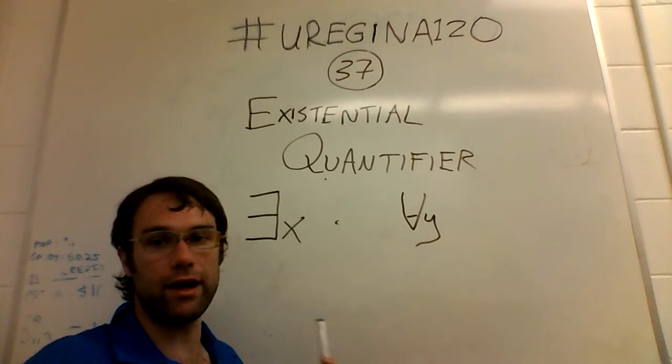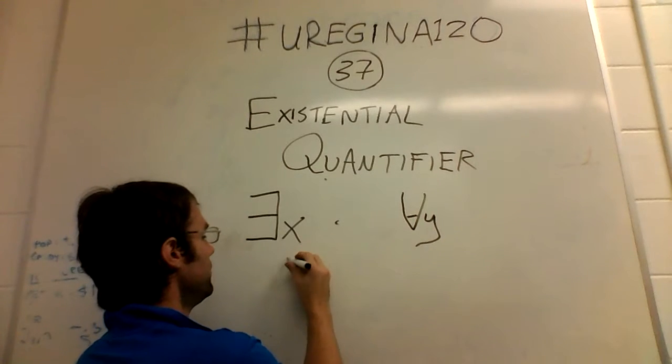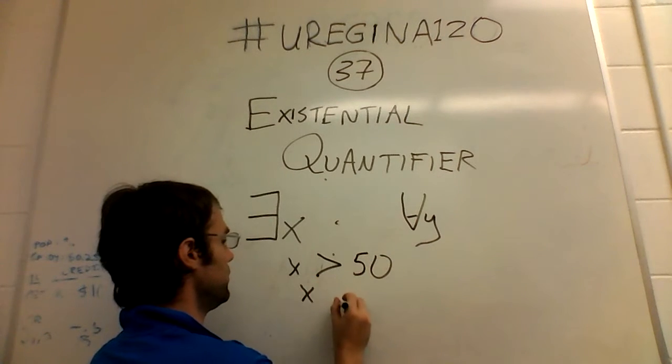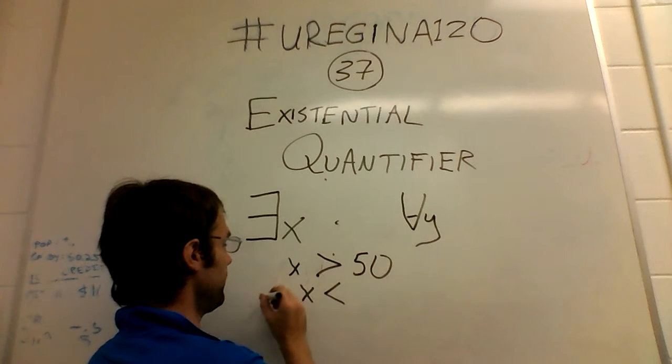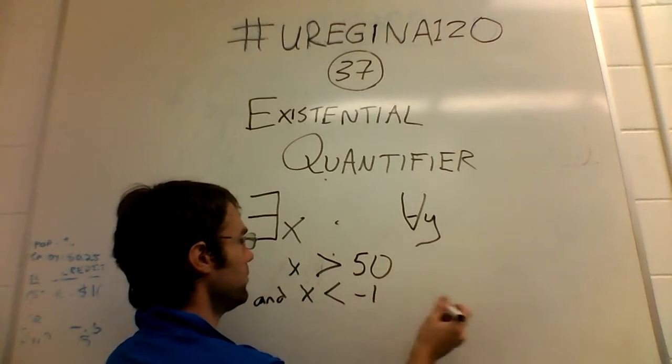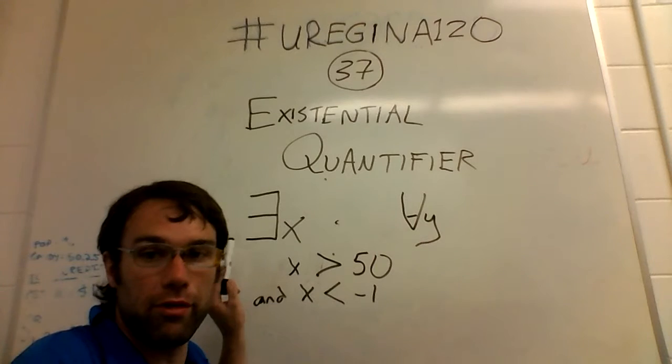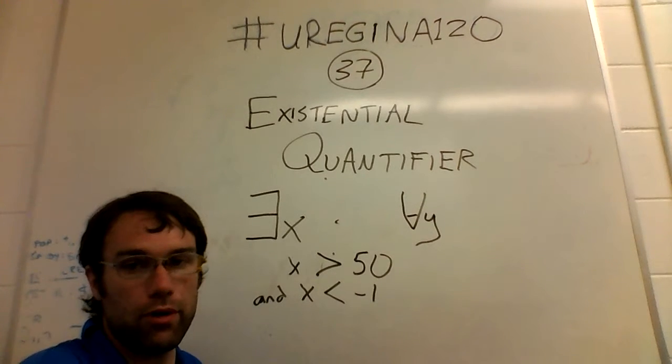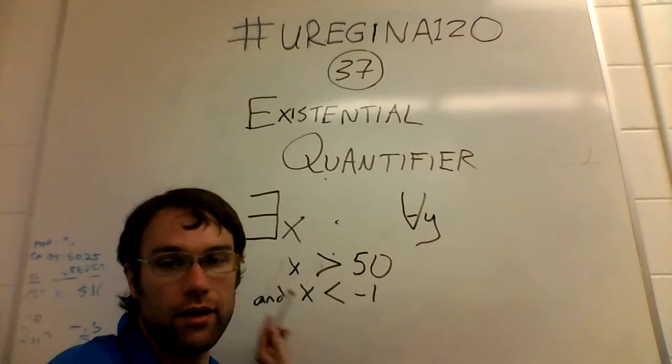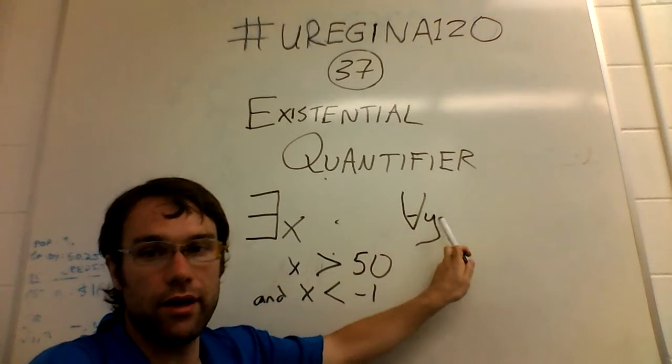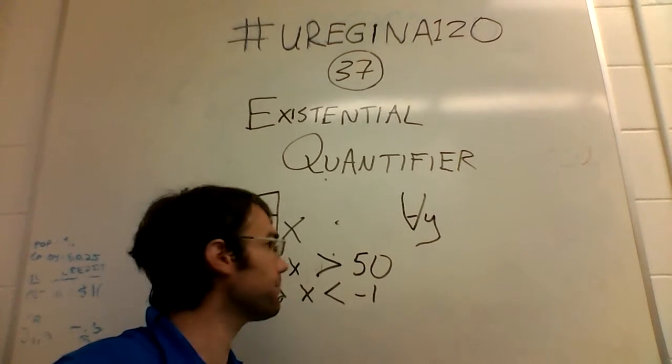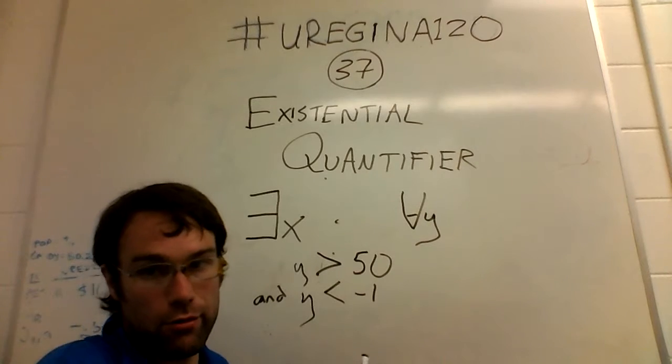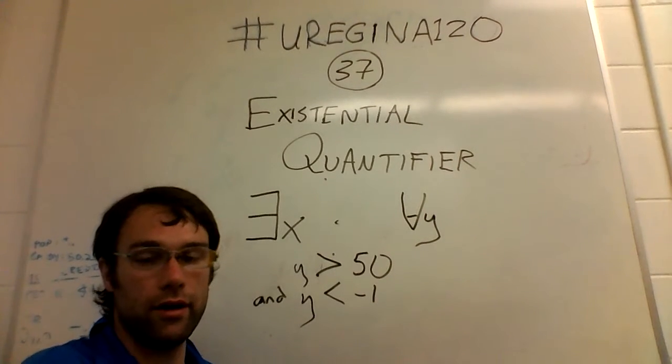For example, we'll try to write a false thing for both of them. You can say there exists some X that X is greater than 50 and X is less than minus 1. Well, that's impossible, because you can't be both greater than 50 and less than minus 1. Similarly, you could say for all Y, where Y is greater than 50 and Y is less than minus 1. Again, this refers to nothing. There is no such Y. It's impossible to define that.